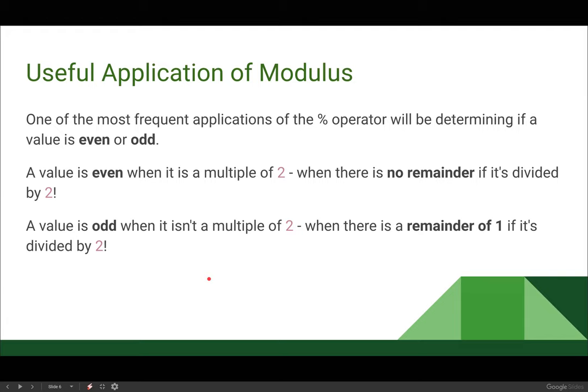One of the most frequent applications of this operator, the mod operator, is determining whether a value is even or odd. We can determine when a value is even by knowing that it is a multiple of 2, when there is no remainder if it's divided by 2. A value is odd when it isn't a multiple of 2, when there is a remainder of 1 when you divide it by 2. And those are the only two possible scenarios, because if you have an even number and you add 1 to it, it is no longer divisible by 2, so it becomes odd. And when you add 1 to that number, it becomes divisible by 2 again. Each pair you go, you're going to toggle back and forth between even and odd.